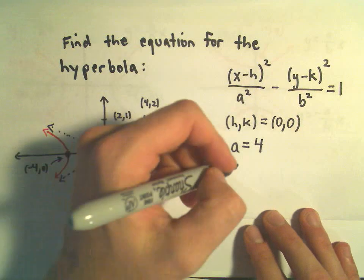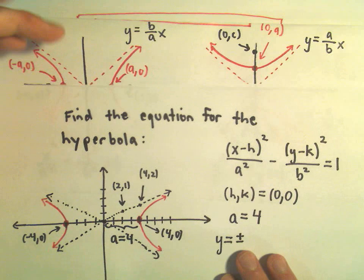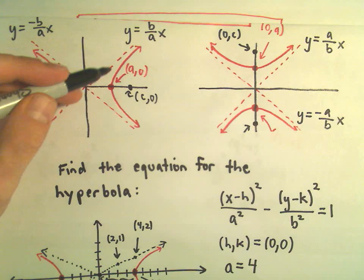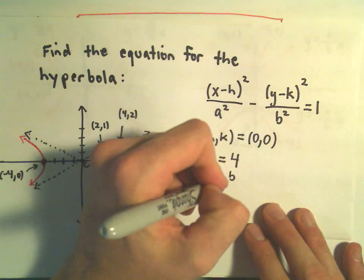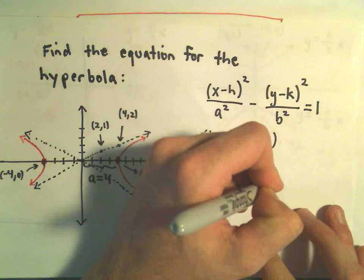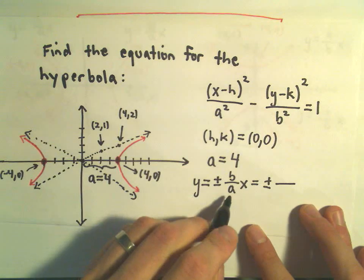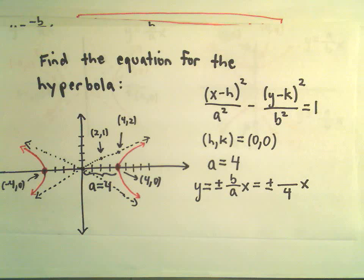And the last thing I'm going to use is, remember our asymptotes are at positive and negative. For this type, the ones that open to the left and to the right, we use positive and negative b over a x. But we know our a value in this case, we've already figured it out, that's 4.